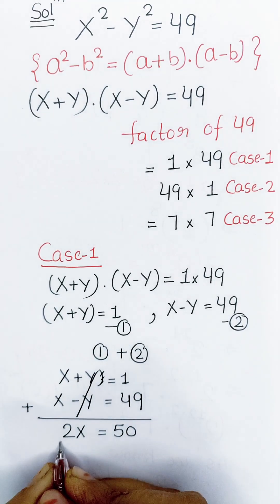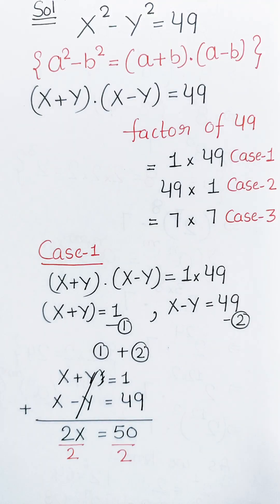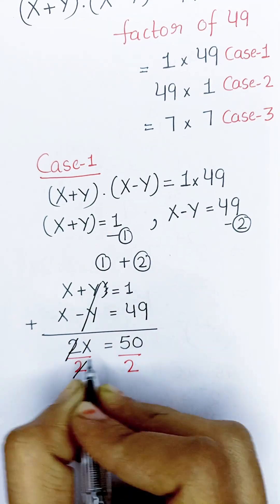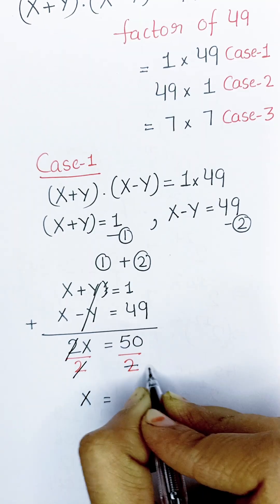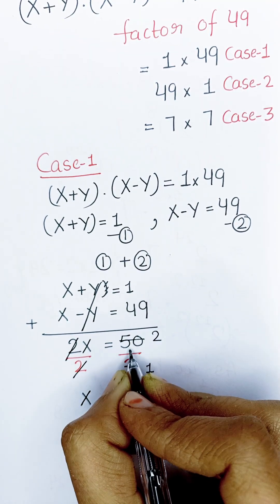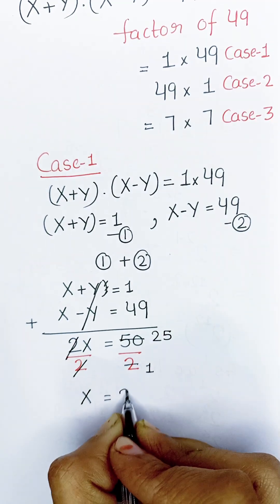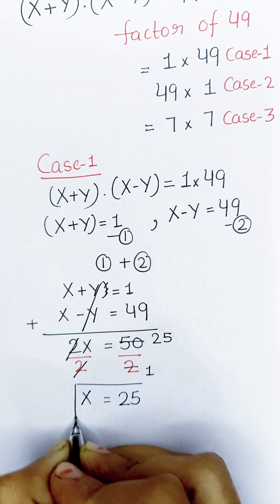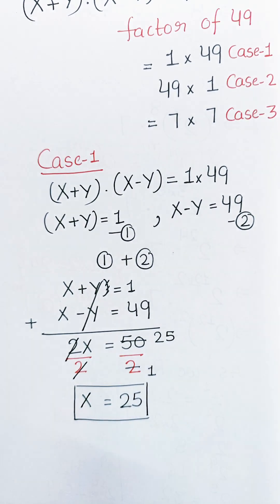Divide both sides by 2. The 2s cancel on the left-hand side, leaving x. On the right-hand side, 50 divided by 2 gives us 25. So the value of x is 25 from here.